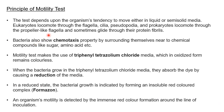Regarding the principle: this test depends upon the organism's tendency to move either in liquid or semi-solid media. In liquid, we suspend the culture in saline solution and do wet mount or hanging drop method to check whether the organism can move. Semi-solid agar is used for the biochemical test — the tube assay or plate assay. Eukaryotes locomote through flagella, cilia, and pseudopodia, while prokaryotes locomote through propeller-like flagella and sometimes glide through their protein fibrils.